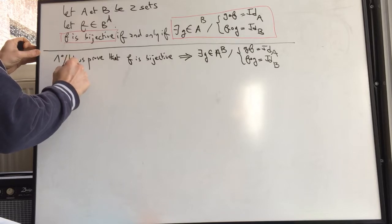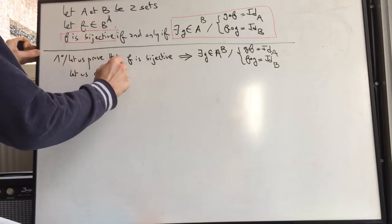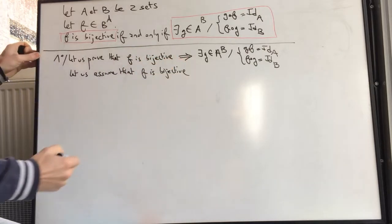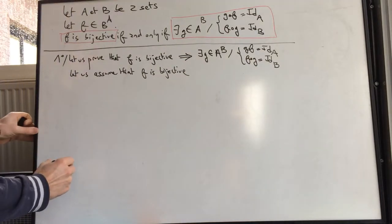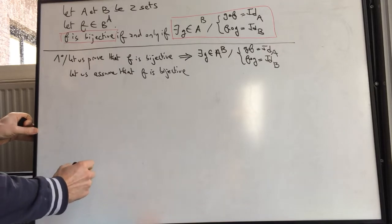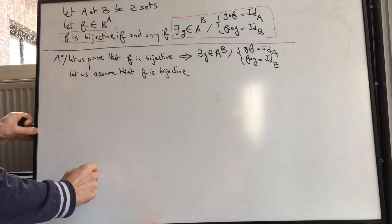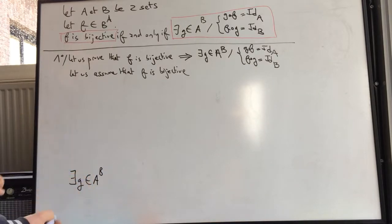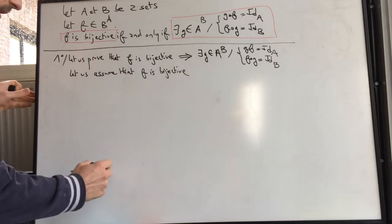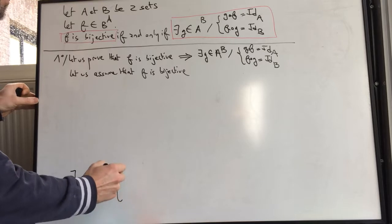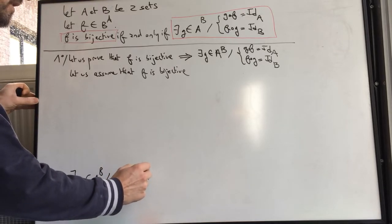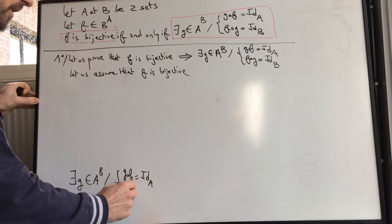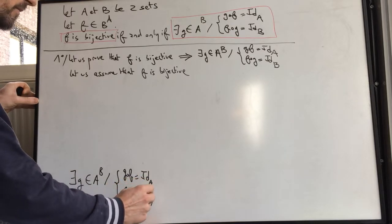So we write: let's assume that f is bijective. Then the conclusion is there exists an element g of A to the power of B such that, on the one hand, g∘f is equal to the identity map of A, and on the other hand, f∘g is equal to the identity map of B.